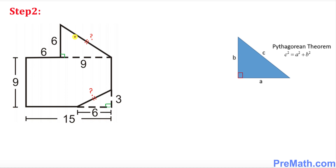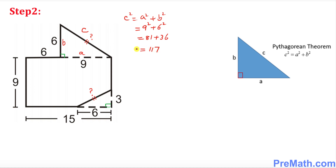Let's focus on the top right triangle. We're going to call this side a, this side b, and this is side c. Applying the Pythagorean theorem: c² = a² + b², so a is nine and b is six — that's 9² + 6² = 81 + 36 = 117. So c² = 117, and taking the square root, c = √117.